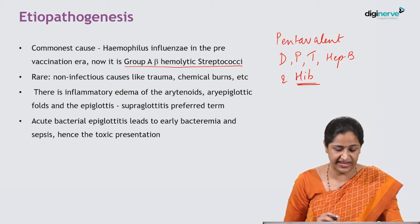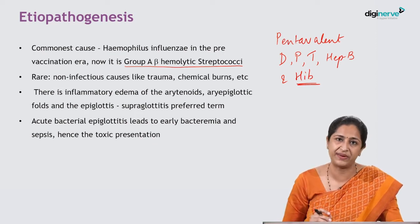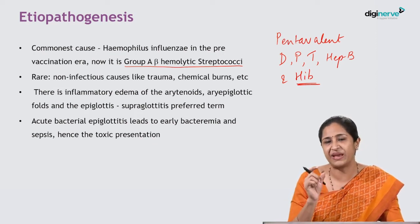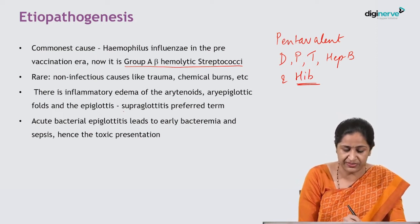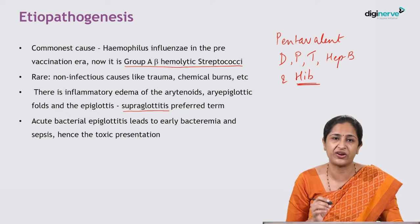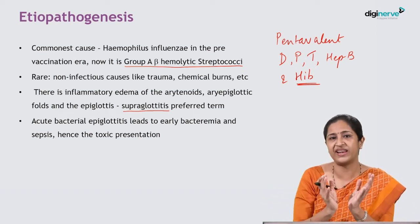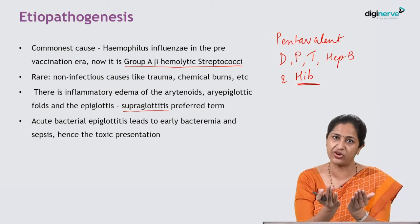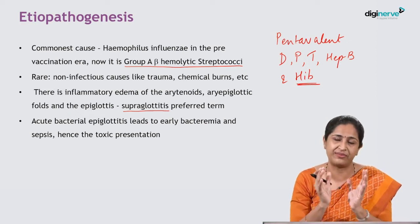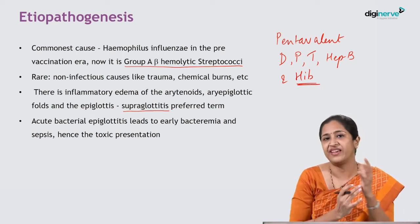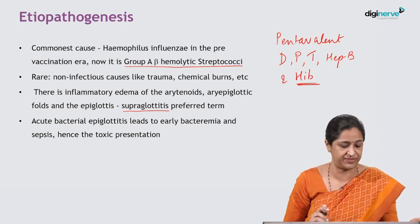This results in inflammatory edema of the arytenoids, aryepiglottic folds and the epiglottis. The correct and preferred term is actually supraglottitis, because the epiglottis guards the inlet and the surrounding aryepiglottic folds and arytenoids all get inflamed, reducing the net diameter of that airway.